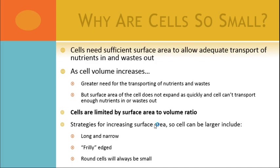If they get too big, as they get bigger they're going to need more nutrients and make more waste. But as they get bigger, their surface area to volume ratio decreases. So you have a need for more stuff, but you actually have less space relatively to get it across — cells are limited by the surface area to volume ratio. Strategies for increasing surface area so cells can be larger include their shape: they can be long and narrow, or they can have frills, like the microvilli in your intestines that extend the surface area. But if you have just a regular round cell, it will always be the smallest.